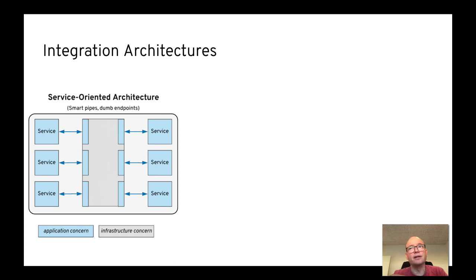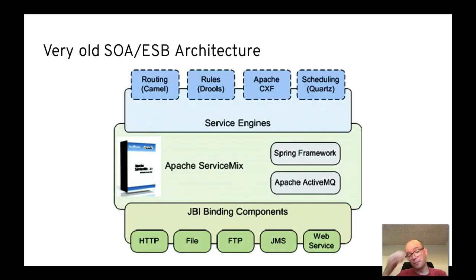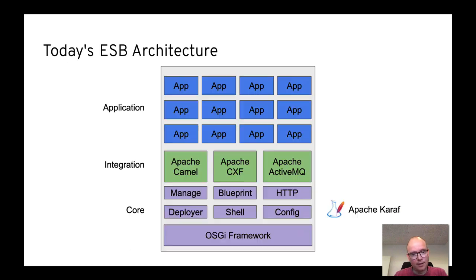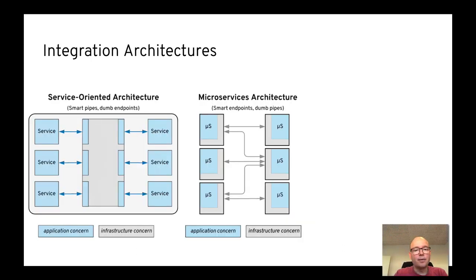SOA tends to create centralized software and teams where things become a bottleneck. It's not designed for change, and it's not cloud-friendly — not immutable containers and all those things. If you look at an architecture from back then, it was based on a specification called JBI. There was a product called Apache ServiceMix created around that spec, and ServiceMix was one of the fathers of Camel — inside ServiceMix there was a routing engine that became Camel. Today's ESB architecture is primarily based on a runtime with OSGi called Apache Karaf, where many Camel applications run in one giant JVM — kind of like a monolith.